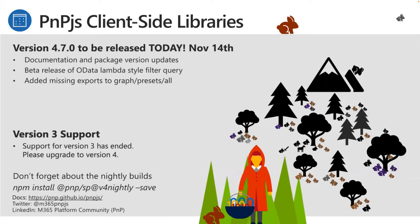We had planned to release PnPjs 4.7 on Monday but had some delays. We're hoping to get that processed this afternoon — there were a couple of breaking issues to fix. The biggest feature is a significant improvement by Daniel Toft on how we do filters for REST calls — we now have Lambda-style filters. It's been on nightly for the last couple of weeks and is in beta, so please give feedback. Also an update to the Graph presets. Version 3 support has ended — please upgrade to v4.